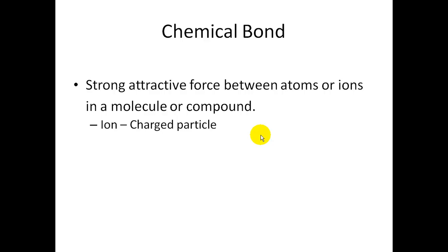Chemical bonds are strong attractive force between atoms or ions in a molecule or a compound. Remember, an ion is a charged particle, either positive or negative. Chemical bonds are formed by either transferring electrons, meaning that they either lost or gained an electron, or by sharing their electron.